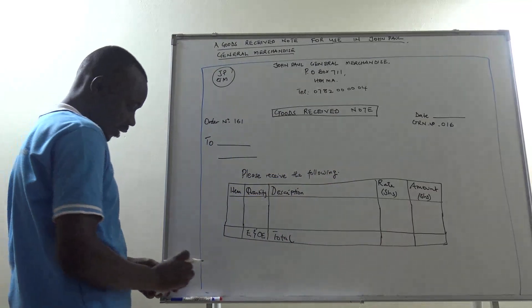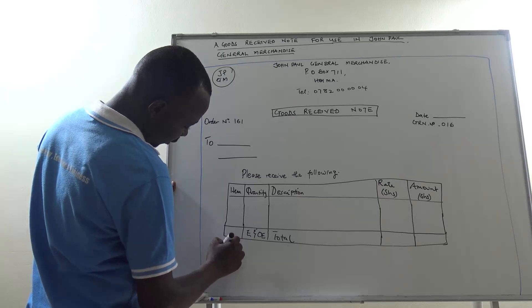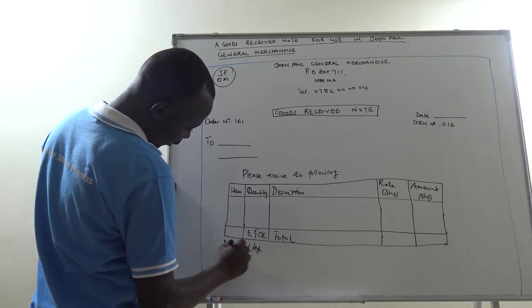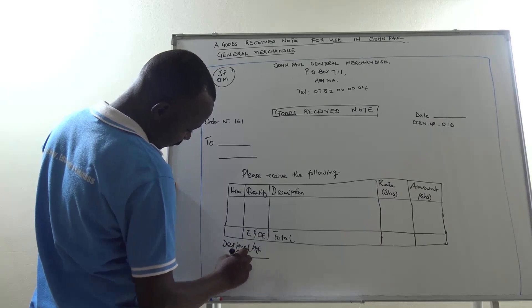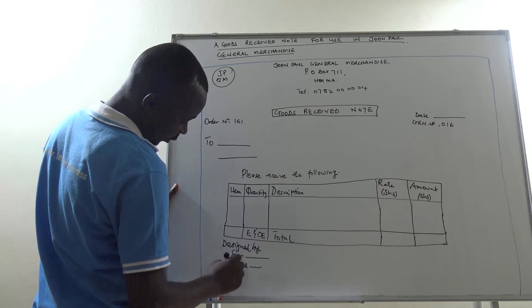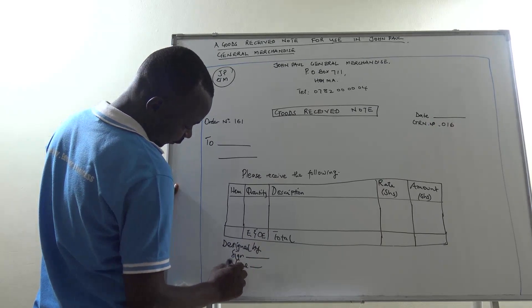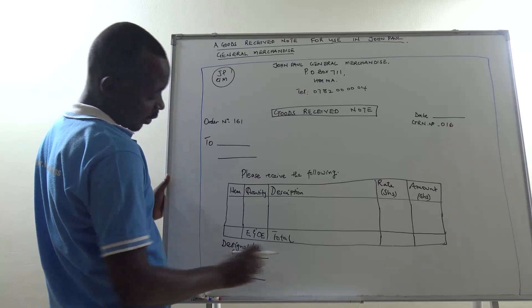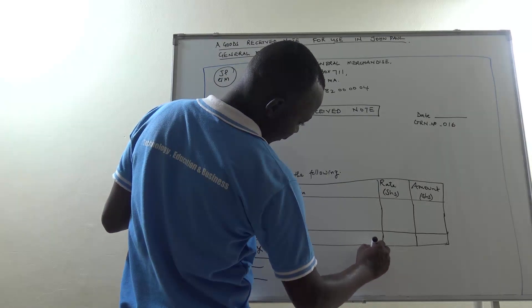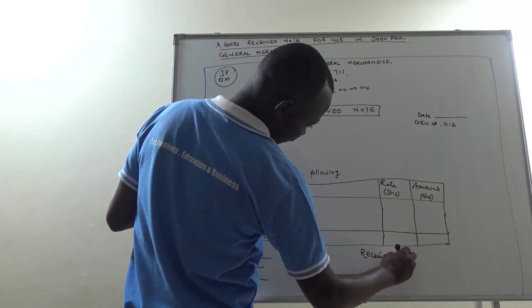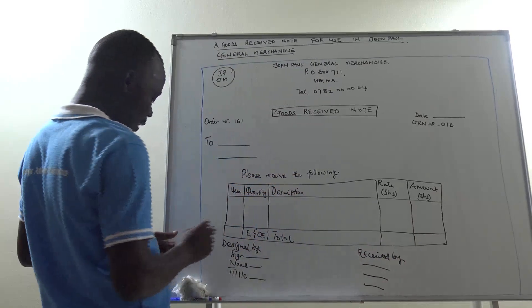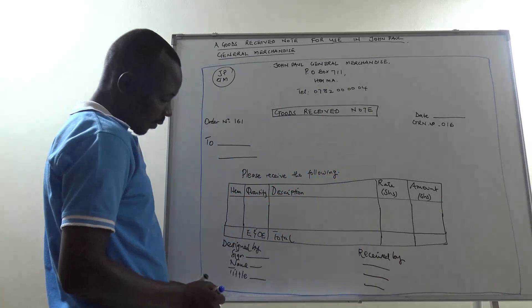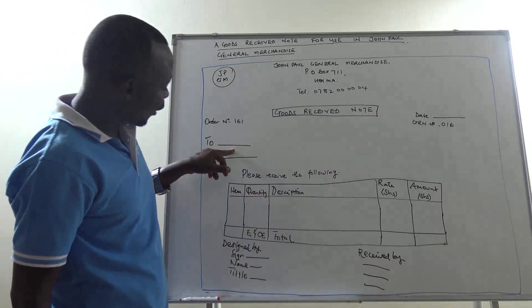Then we say you need to have the name and the signature. Designed by, you have the signature, name, or the title. Then here, received by. Then you close your frame.